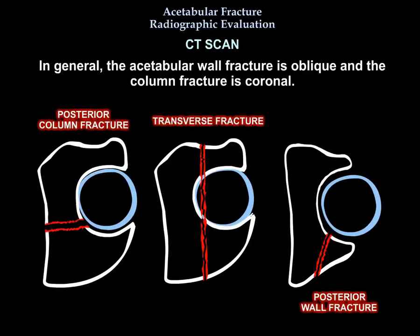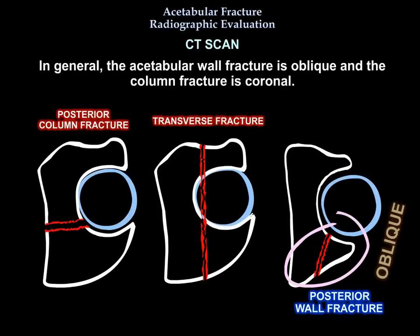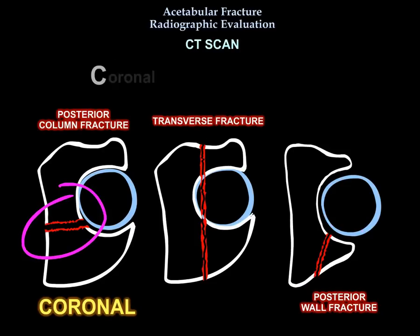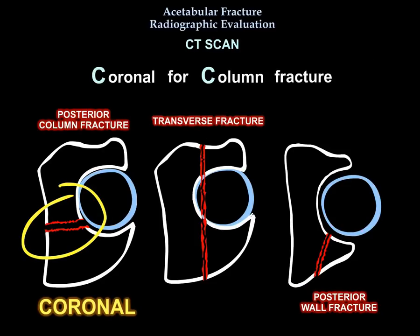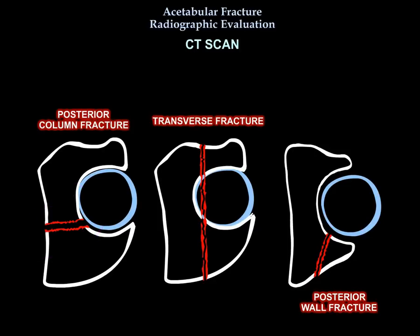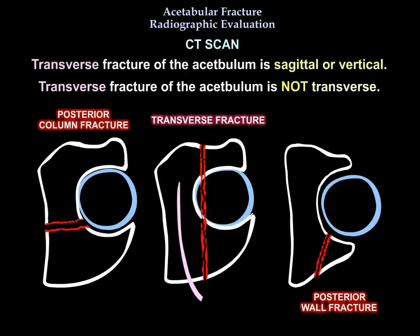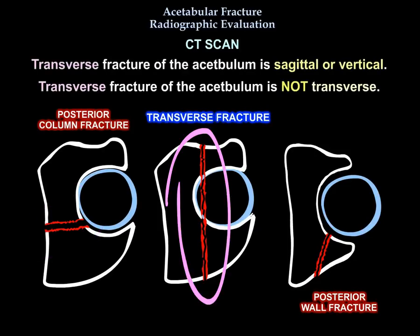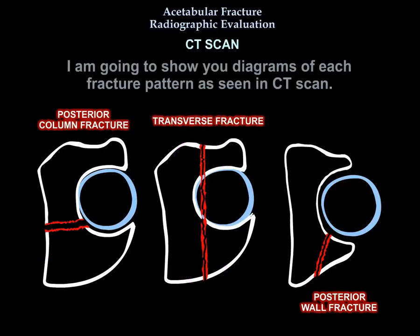In general, the wall fracture is oblique on CT, the column fracture is coronal, and the transverse fracture is sagittal or vertical. Note that a transverse fracture of the acetabulum is not truly transverse. I'm going to show you diagrams for each fracture pattern as seen on CT scan.